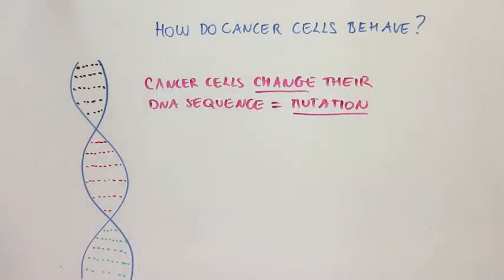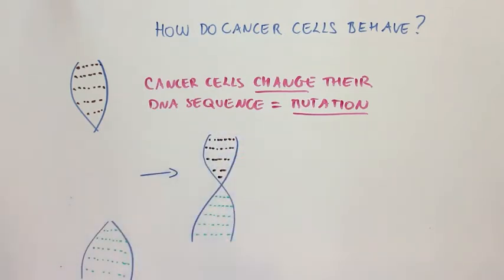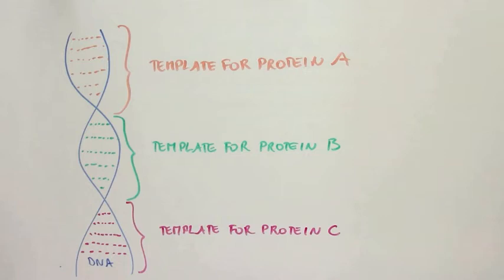One type of mutation that can occur causes the deletion of a large chunk of the DNA sequence. So why would a cancer cell want to delete part of its DNA? That sounds like a terrible idea. Well, DNA provides the template for the synthesis of proteins. Some proteins promote growth of cells, and other proteins prevent cells from growing too much.